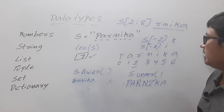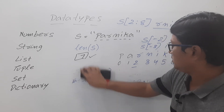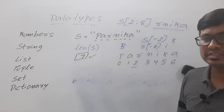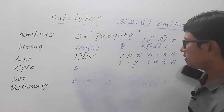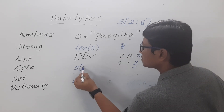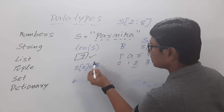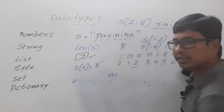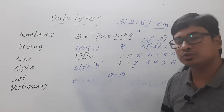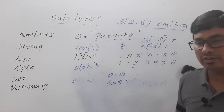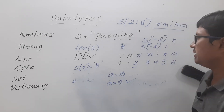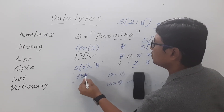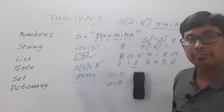Now suppose you have 'parnika' and you want to change the first character from p to b to make it 'barnika'. You might think s[0] = 'b' would work, but this is wrong. Strings in Python are immutable — you cannot change a particular character in a string. It will give you an error. Unlike an integer variable where a = 10 can be reassigned to a = 15, individual characters in a string cannot be modified.